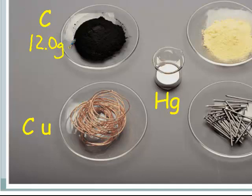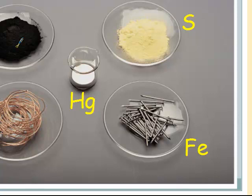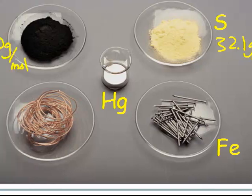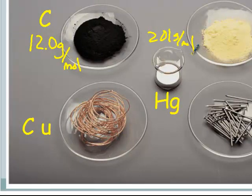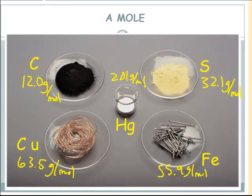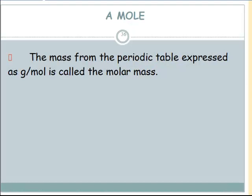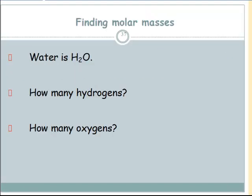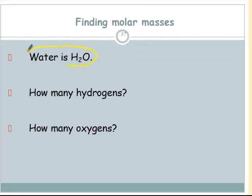Here are some pictures: carbon has a molar mass of 12.0 grams per mole — this represents one mole of graphite. Sulfur is 32.1 grams per mole. Mercury is 201 grams per mole, copper is 63.5 grams per mole, and iron is 55.9 grams per mole. There are pictures of copper wire and one mole of each of these substances. The mass of one mole is called the molar mass, in grams per mole.